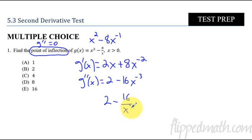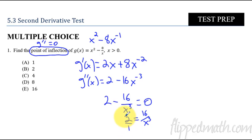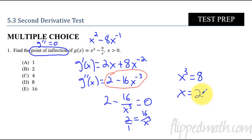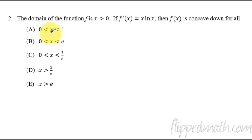The second derivative is 2 minus 16x to the negative three. Now I set the second derivative equal to zero: 2 minus 16 over x cubed equals zero. Solving: 2 equals 16 over x cubed, multiply both sides by x cubed and divide by two, giving x equals the cube root of 8, so x equals 2. Technically I'd verify the second derivative changes signs there, but x equals 2 is the only option, so that's the point of inflection.